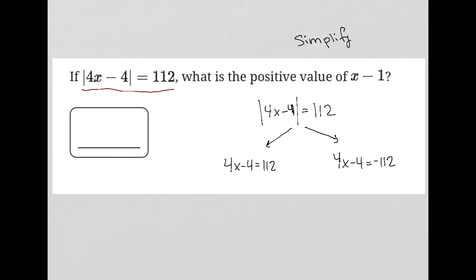Because the question asks for the positive value of x minus 1, I'm going to factor out the 4 so that I have an x minus 1, which makes it easier to isolate. It's not the only way to do this, but it's the way I'm choosing here.